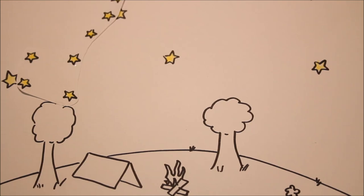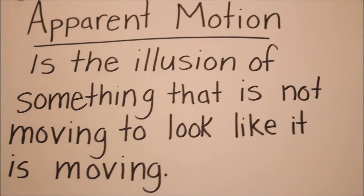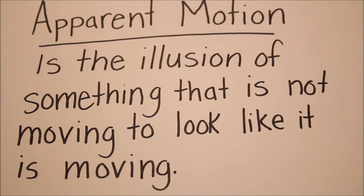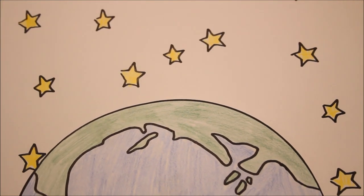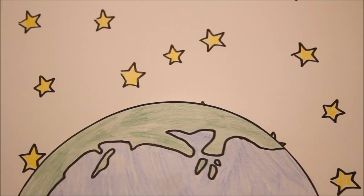So, as a recap, apparent motion is the illusion of something moving when it really isn't. Stars, just like the sun, are not moving around us in a circle. But in fact, Earth is doing the moving, giving us the illusion that everything around us is.